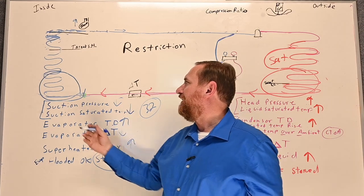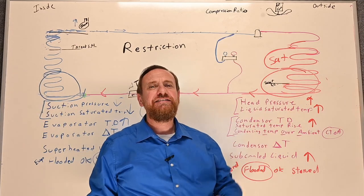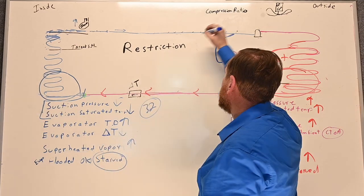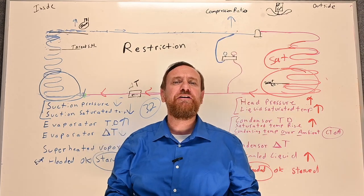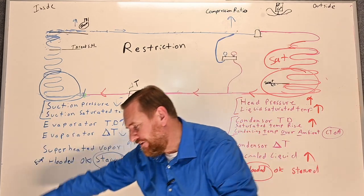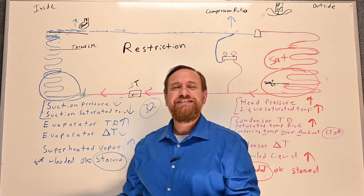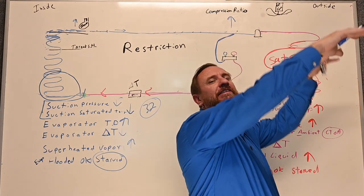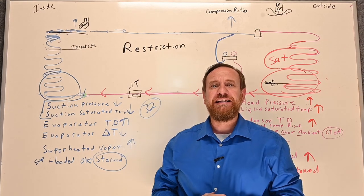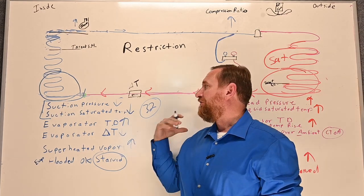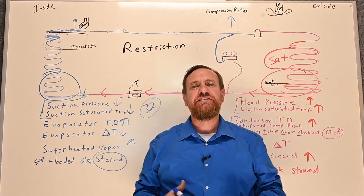Looking at the whole scenario: lower suction pressure and higher condensing pressure means the compression ratio goes up significantly. The compressor now has to pull down to a lower pressure to absorb less dense vapor and then push really hard to build pressure to a higher level. So the compression is doing a whole lot more work. These are the scenarios you're going to see with a refrigerant restriction.